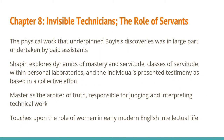Chapter 8 explores the invisible practitioners and influencers behind work like Boyle's. Shapin explores dynamics of mastery and servitude, classes of servitude within personal laboratories, and the individuals who presented testimony as based in a collective effort. The master, though, is positioned as the arbiter of truth. Shapin also touches on the role of women in early modern English intellectual life. Educated women were definitely active in knowledge production in the arenas of moral life, for example, but were restricted from fields like experimental science by strong cultural norms.